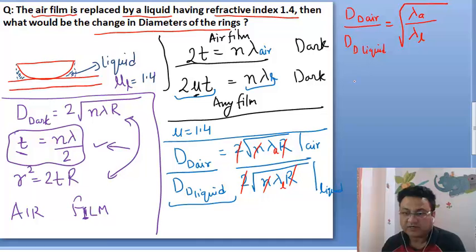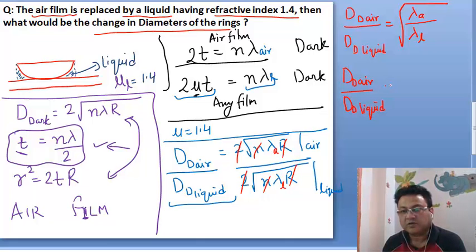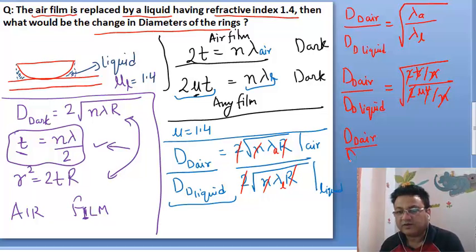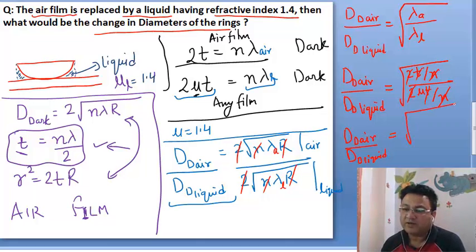Lambda liquid is lambda by mu. I'm going to cancel twice, cancel n, and we get under root of mu. The diameter of air with respect to diameter of dark fringe in liquid would be given by under root of mu.